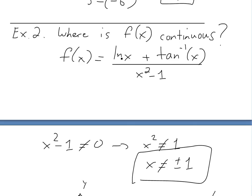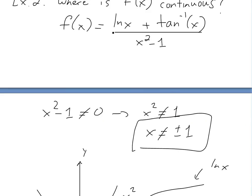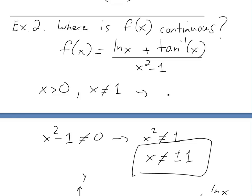So going back to the full function: ln x is continuous only for x > 0, arctan is continuous everywhere, and you can't divide by 0 at x = ±1. We have to find which condition suits the whole function. That's x greater than 0 and x not equal to 1, since x = -1 is already excluded by x > 0. We write this as the open intervals (0, 1) union (1, infinity) — both open intervals.